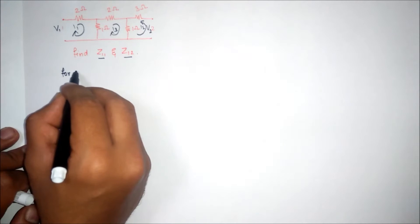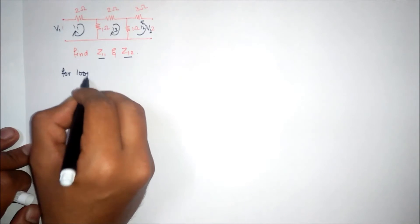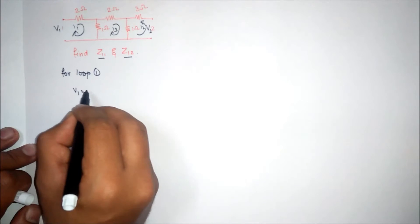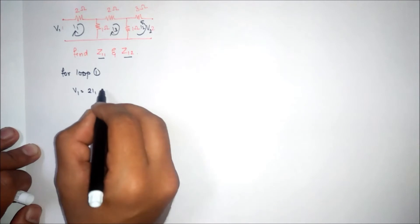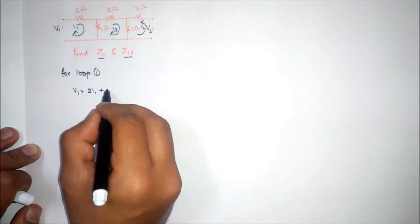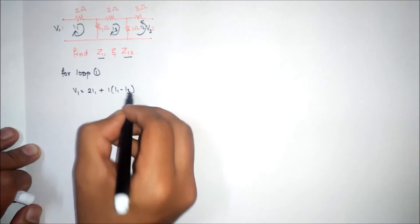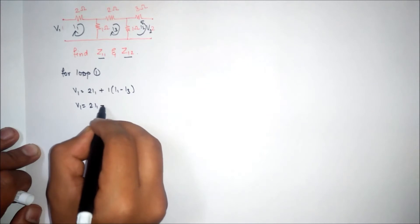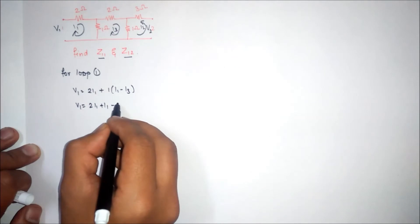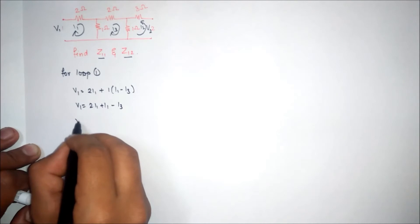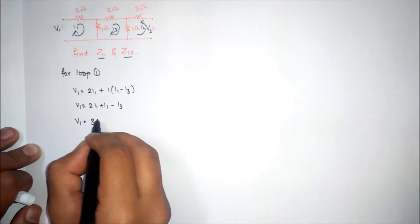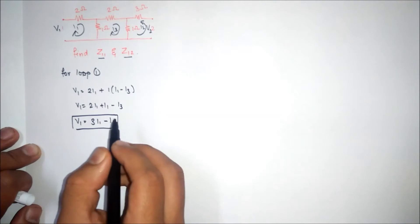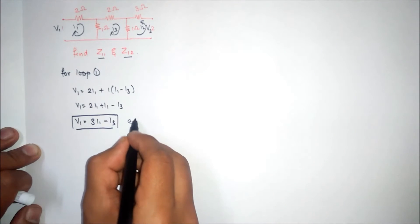The loop equation for loop 1 will be: v1 is equal to 2i1 plus 1(i1 minus i3), which simplifies to v1 equals 2i1 plus i1 minus i3. Therefore, v1 equals 3i1 minus i3. This is the first equation.